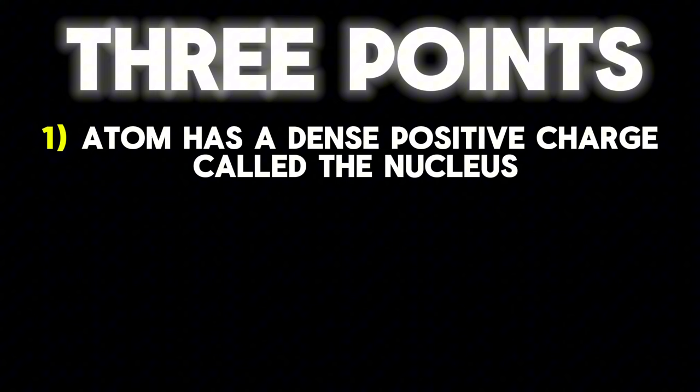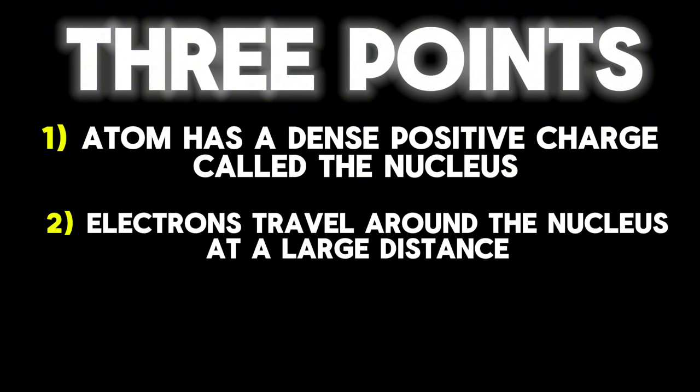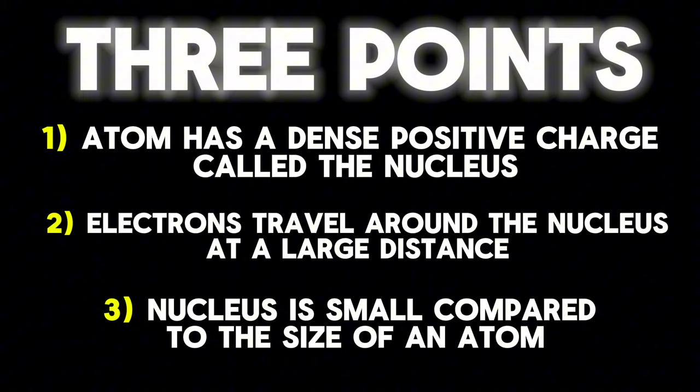Point number one: an atom has a dense positive charge called the nucleus. Point number two: electrons travel around the nucleus at a large distance. And point number three: the nucleus is small compared to the size of an atom.